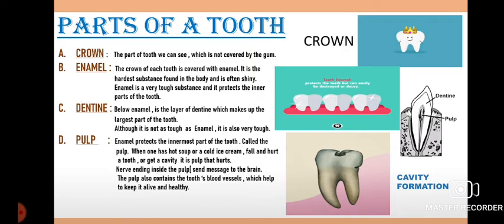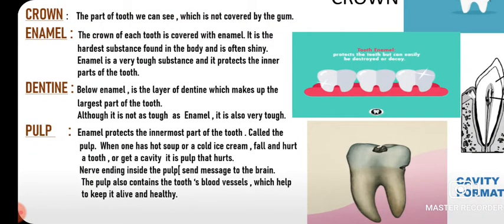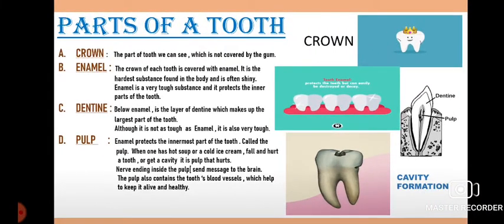The pulp is where cavity formation occurs. Tooth decay is when one has hot soup or cold ice cream and the tooth hurts — it is the pulp that hurts. Nerve endings are present inside the pulp, sending messages to the brain. The pulp also contains blood vessels, which help to keep it alive and healthy. So the four main structures of the tooth are crown, enamel, dentine, and pulp.